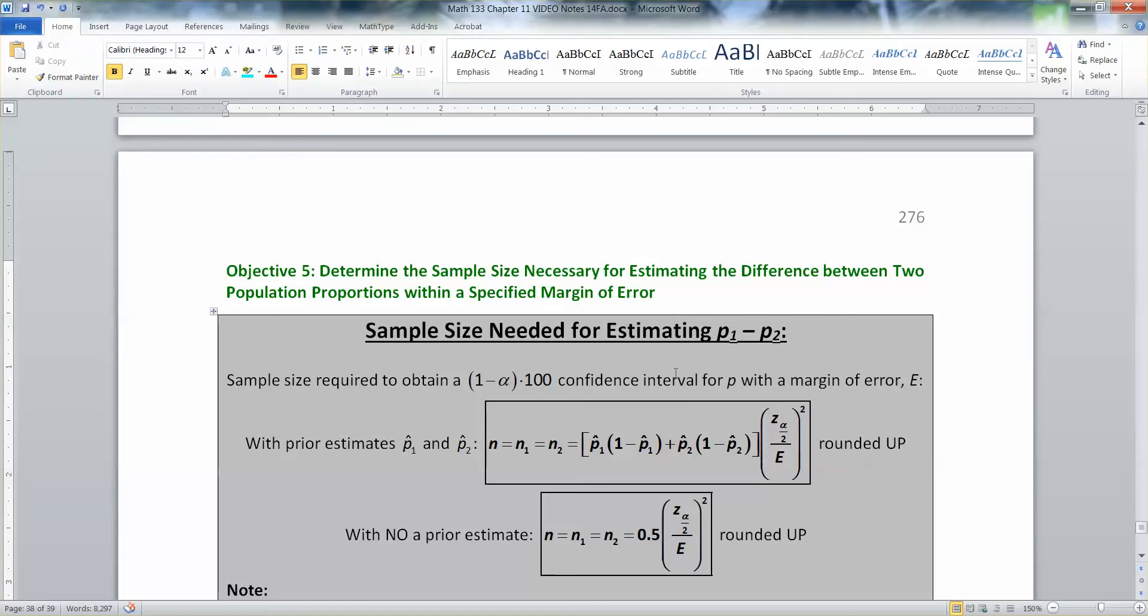The last thing we want to do in section 11.1 is determine the sample size necessary for estimating the difference between two population proportions within a specified margin of error. The key in all of that is sample size when you want to compute sample size.